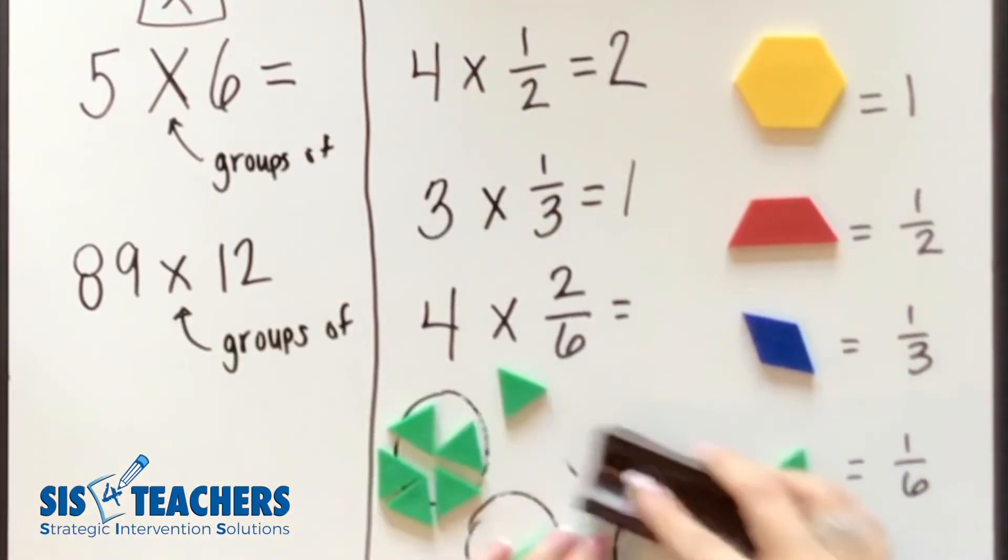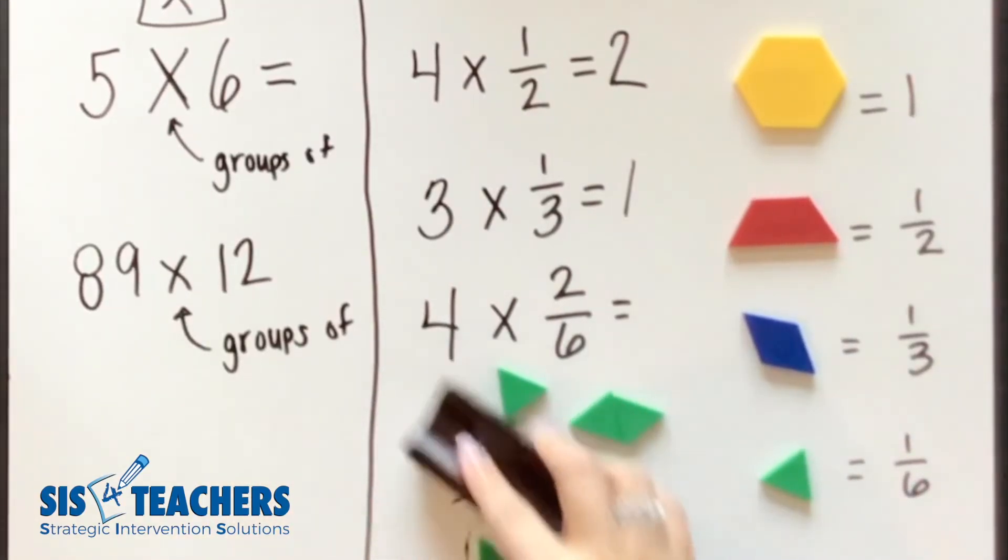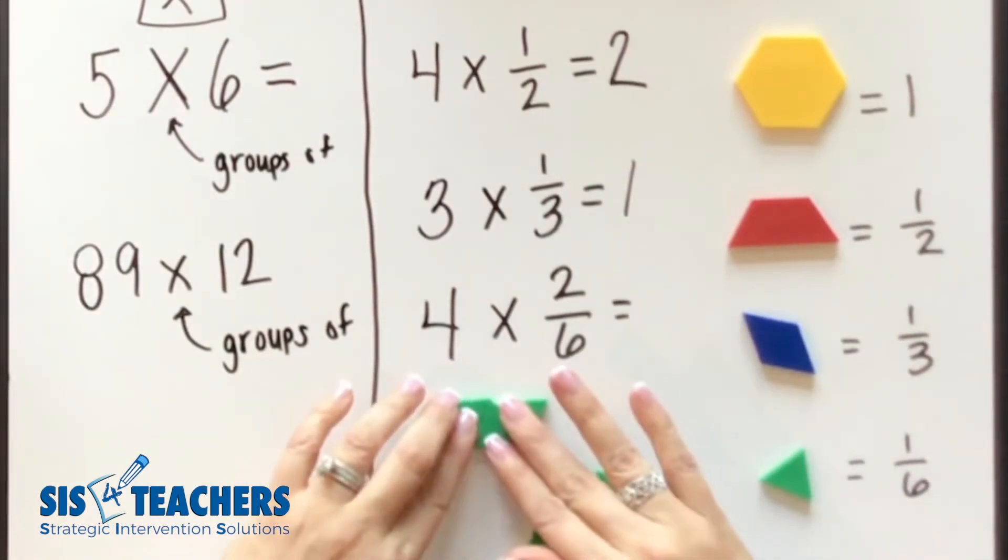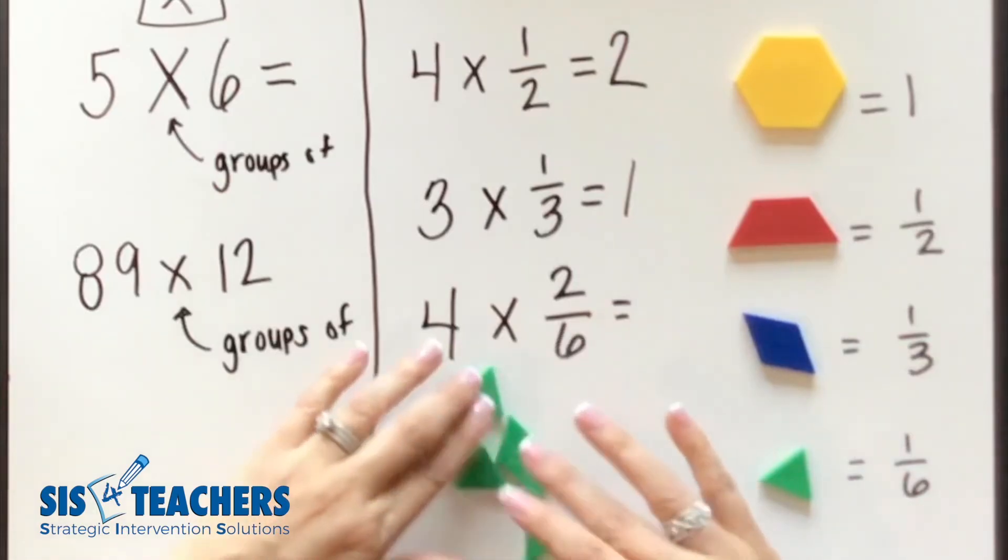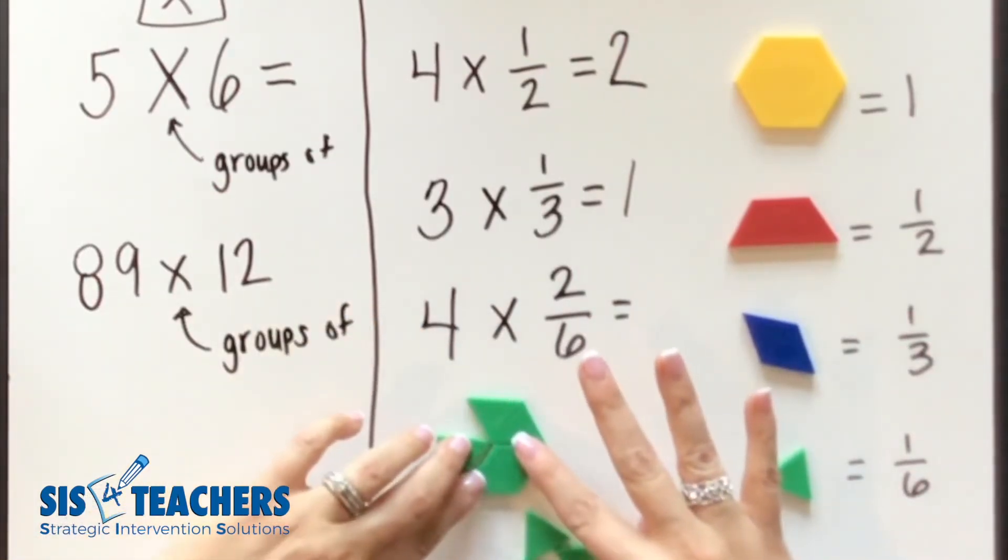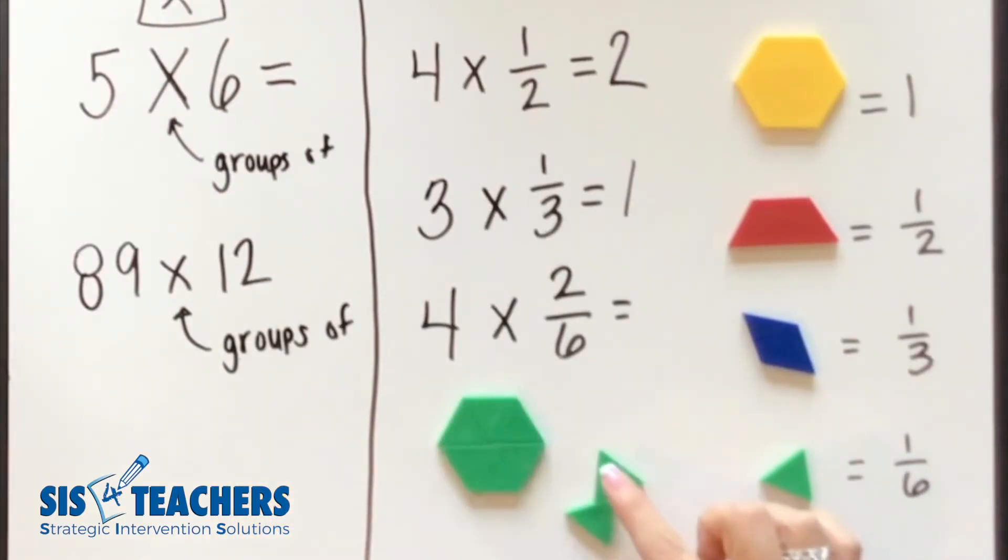So if I erase these circles that we were using with the groups, because now we know we have exactly four groups of 2/6, I'm going to go ahead and put in my groups together to show it as I'm looking at the whole. And we're going to talk about how these pattern blocks can really help students and help conceptualize what we're doing. So I know that I have six, seven, eight.